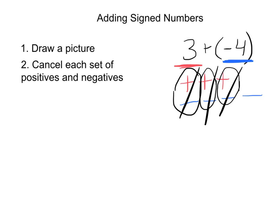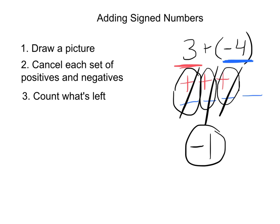We canceled any sets of positives and negatives if they're there — there's not always one, but if there's a set that cancels, go ahead and cancel them. Then step number three is to count what's left. In this case, we have one negative, so one negative means the answer is negative one, and that's it.